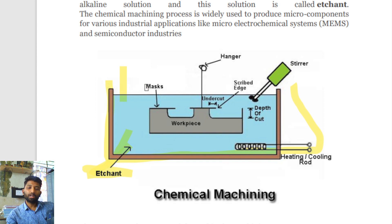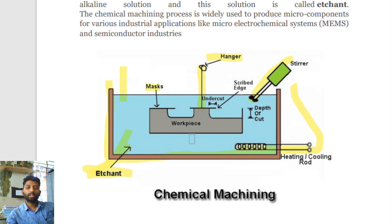Here there is a mask. A hanger is used for the hanging purpose — that is called hanging. The material is used for the hanging purpose. A stirrer is used to continuously mix the liquid. There is also heating and cooling via a cooling rod for the chemical reaction. So there is a workpiece — place and apply it, and the chemical reaction removes material from the workpiece.